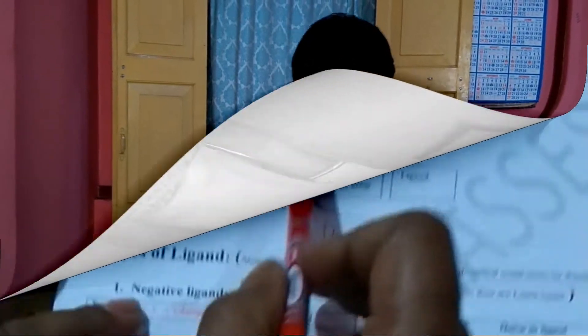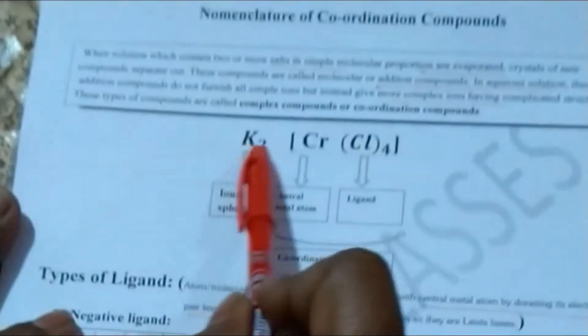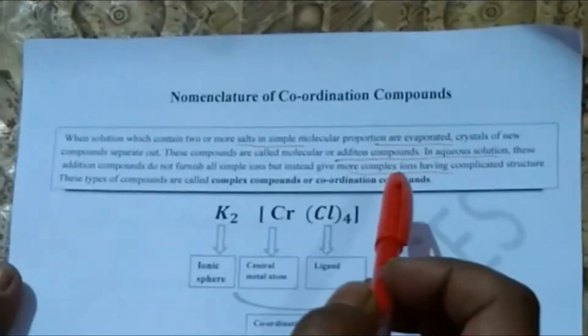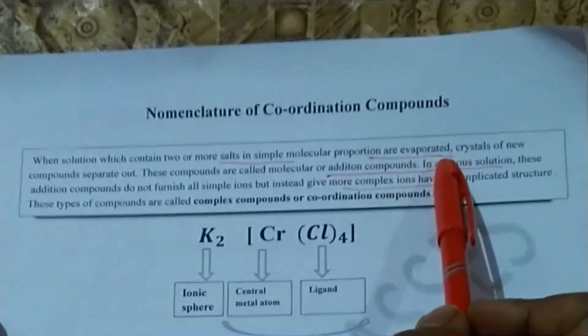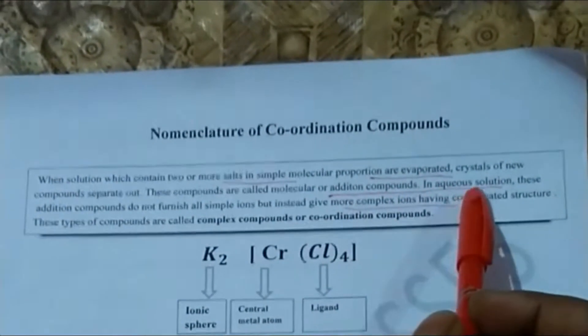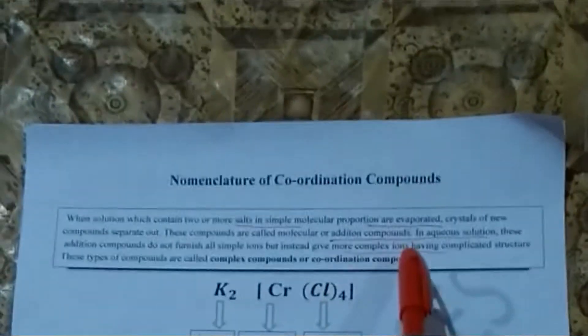IUPAC has fixed some rules for it. When a coordination compound forms — when we mix two simple salts and then evaporate them, it becomes an addition compound. When the addition compound is mixed with aqueous solution, we find some complex ions which do not dissociate into ions further, and those ions are known as coordination compounds.